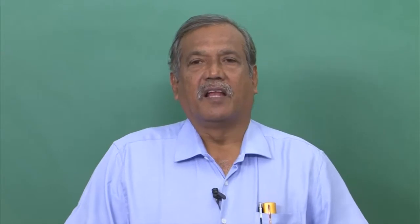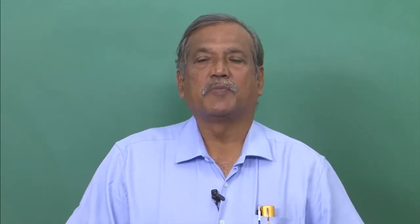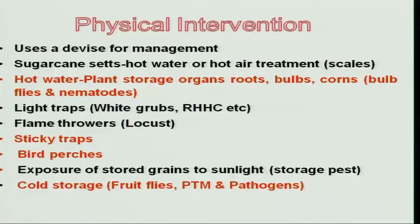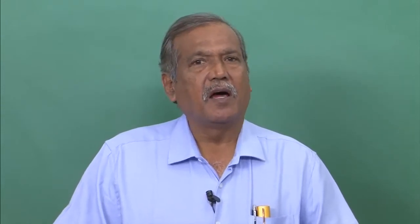In the last three classes we discussed various aspects of ecological pest management methods. Today we will have another set of ecological methods of pest suppression wherein through physical intervention we can reduce the pest population significantly. The meaning of physical intervention is using a device or a material or a source for reducing the pest population.